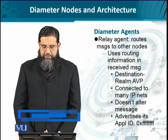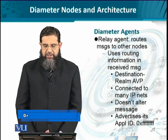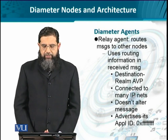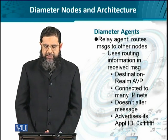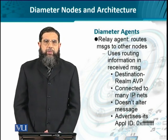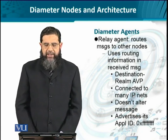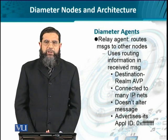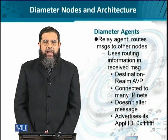Let's start with the agents first. The most important agent that allows the communication between client and server to be realized is the relay agent. It routes messages from the client to the server and from one intermediate relay agent to another. To ensure Diameter messages are successfully delivered between client and server, it uses routing information from the received message, known as the destination-realm application value pair.